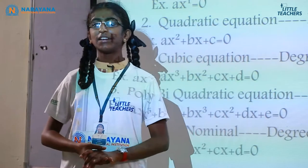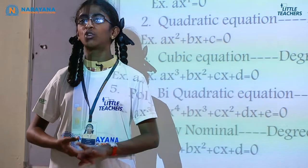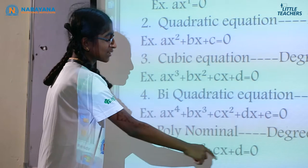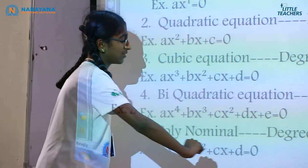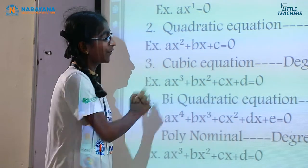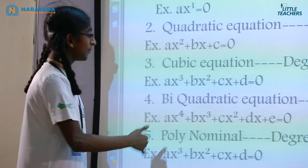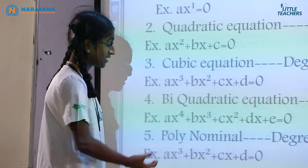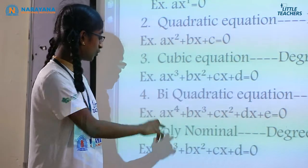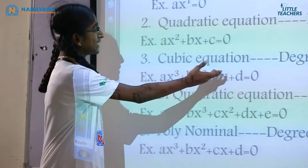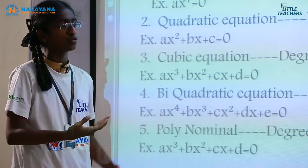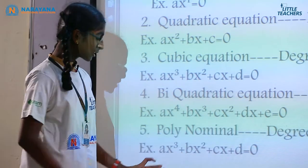Polynomial: the equation which consists of degree 2 or more is called a polynomial. For example, ax³ plus bx² plus cx plus d equal to 0. The example is the same as for cubic equation, because the degree is 3 which is more than 2, so it comes under polynomial.